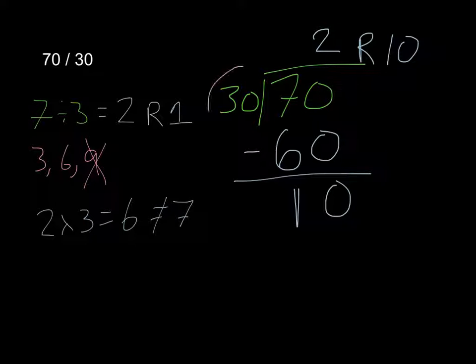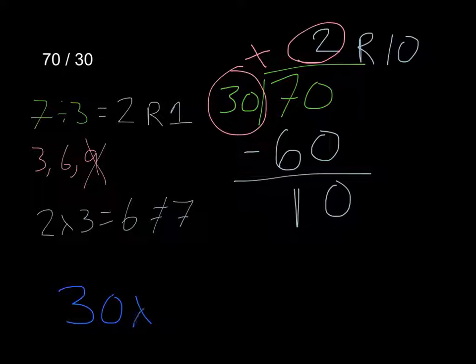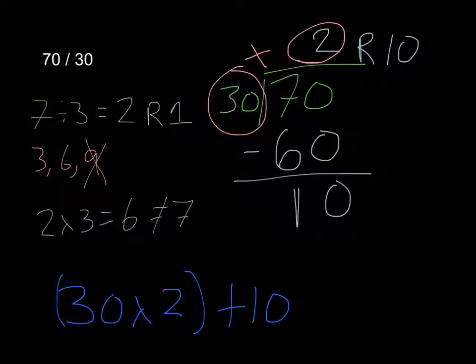That's how I check my work. I take this number, and I multiply it by this number. And if I have a remainder, I add that. So at the bottom here, I have 30 times 2 plus 10. And that's how I check my work. 60 plus 10 equals 70.